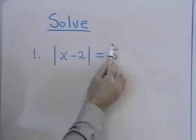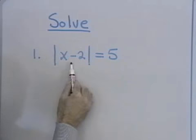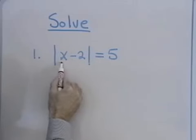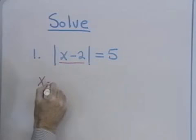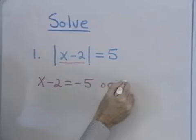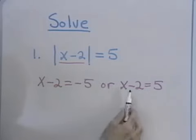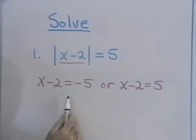We solve this equation by thinking about what's inside the absolute value as being either positive 5 or negative 5. That's the only way we can get the absolute value of a quantity to be equal to 5. So that means that x minus 2 must be equal to negative 5, or x minus 2 is equal to positive 5. In either case, the absolute value of x minus 2 turns out to be 5. So I get two separate equations to solve.